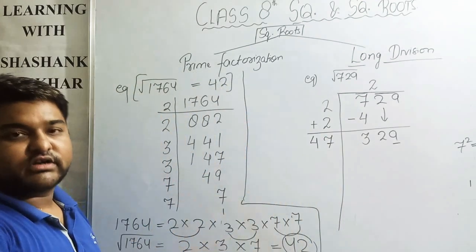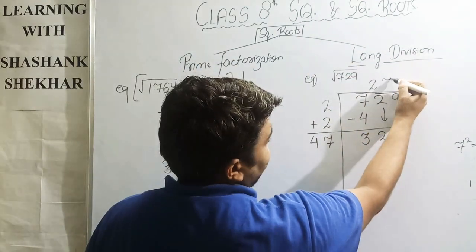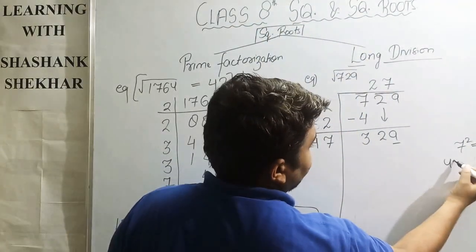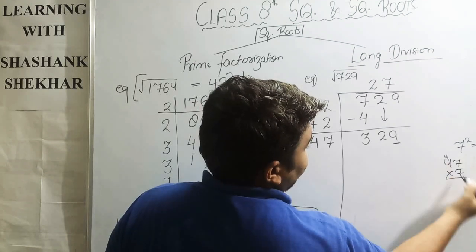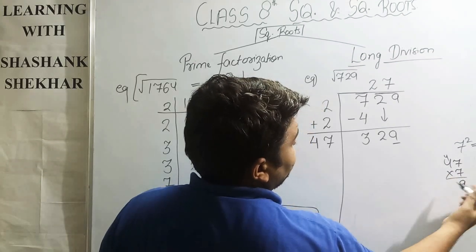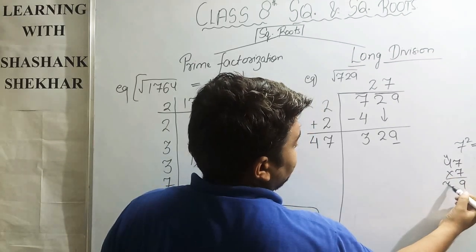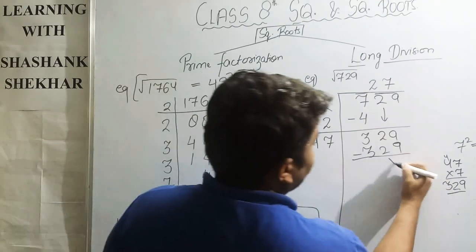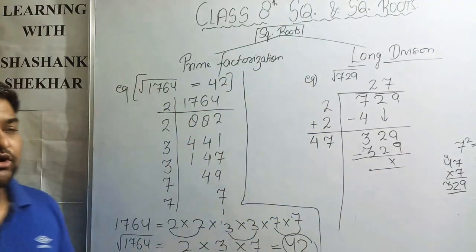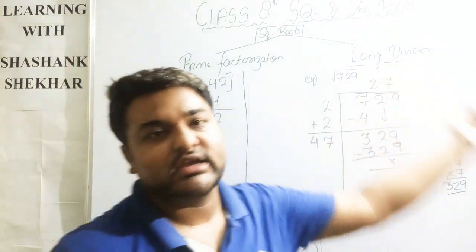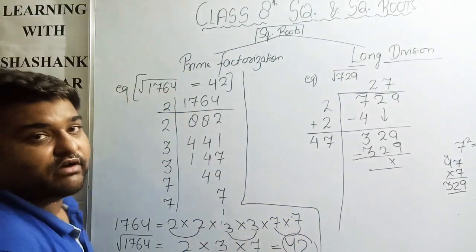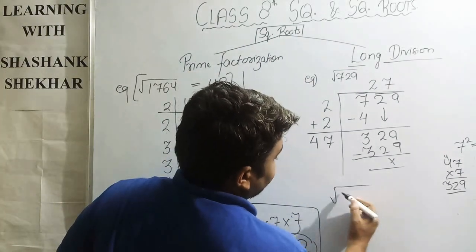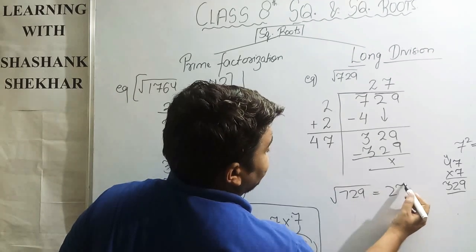We write down and complete the division step. Multiplying 47 × 7 gives 329, and the remainder is 0. Therefore, the square root of 729 is equal to 27.